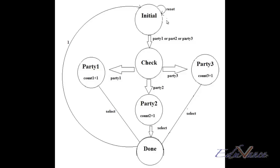The inputs to our system are reset, the signal party 1, party 2, party 3, and the signal select. The outputs for our system are count 1, count 2, and count 3, which represent the number of votes that each party has gained.